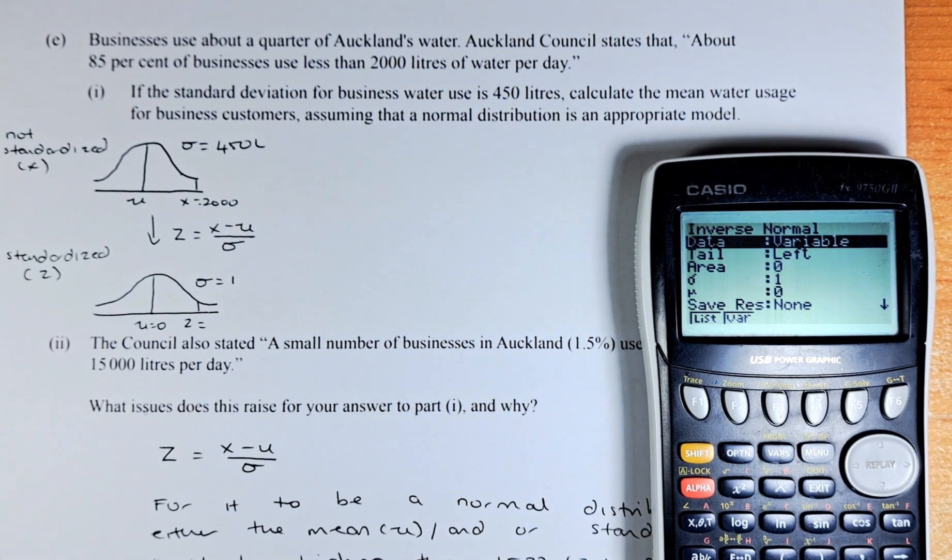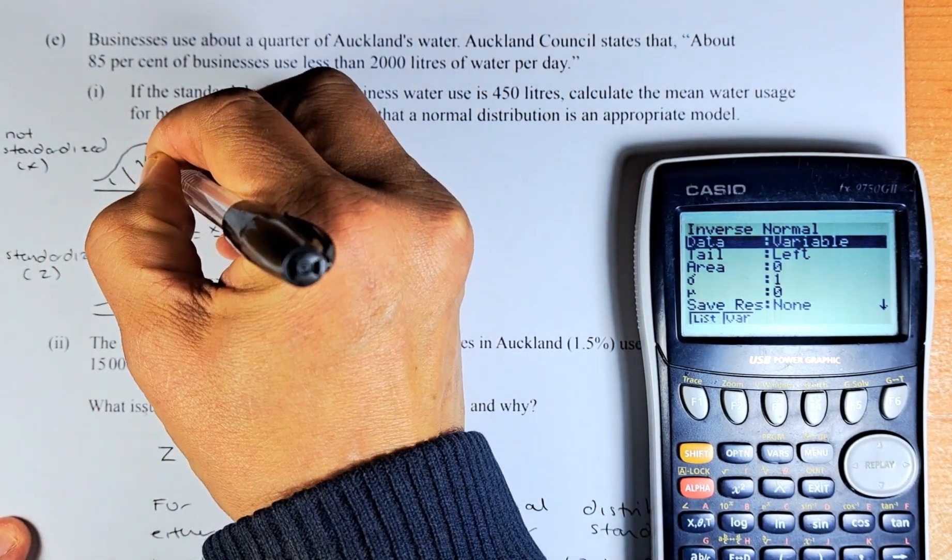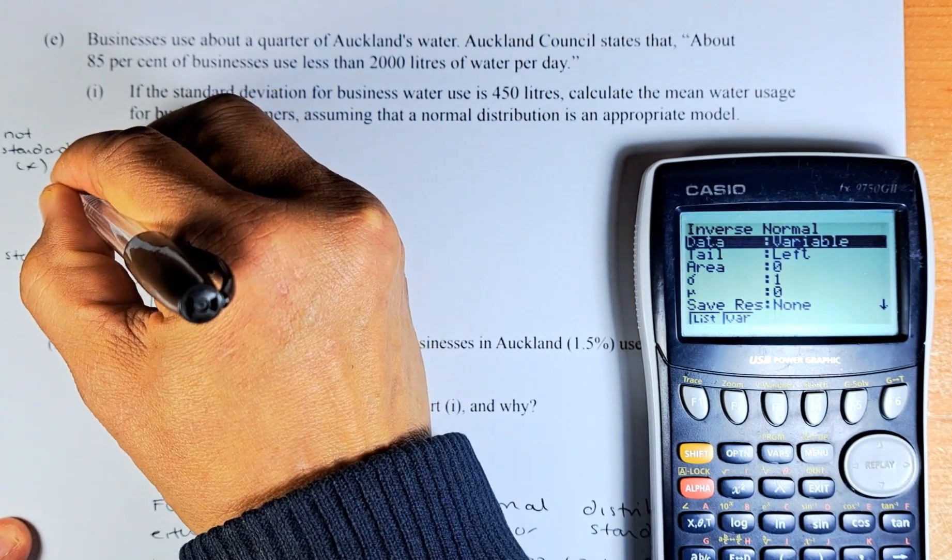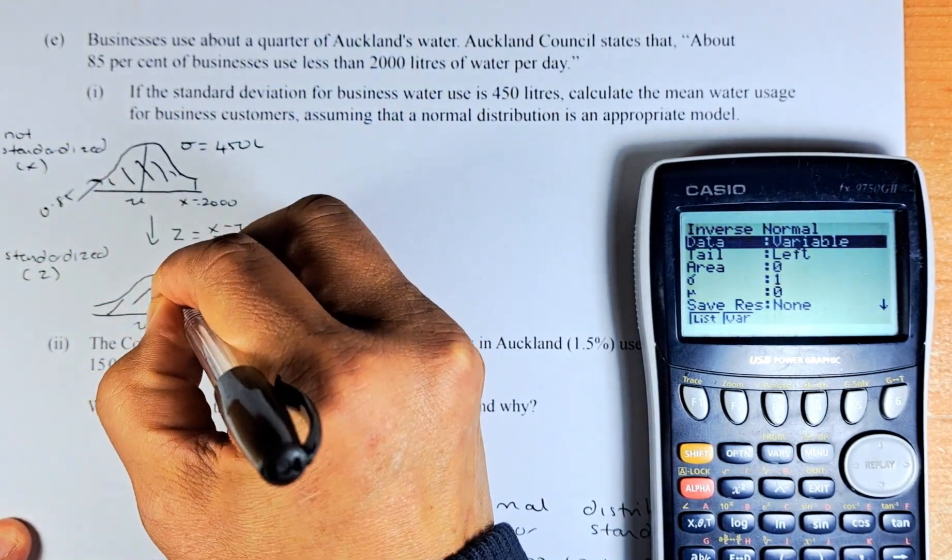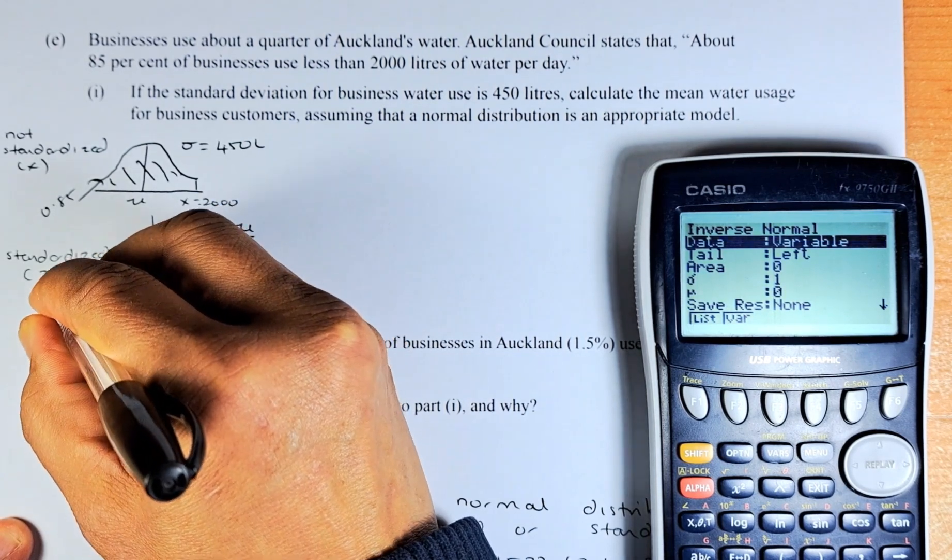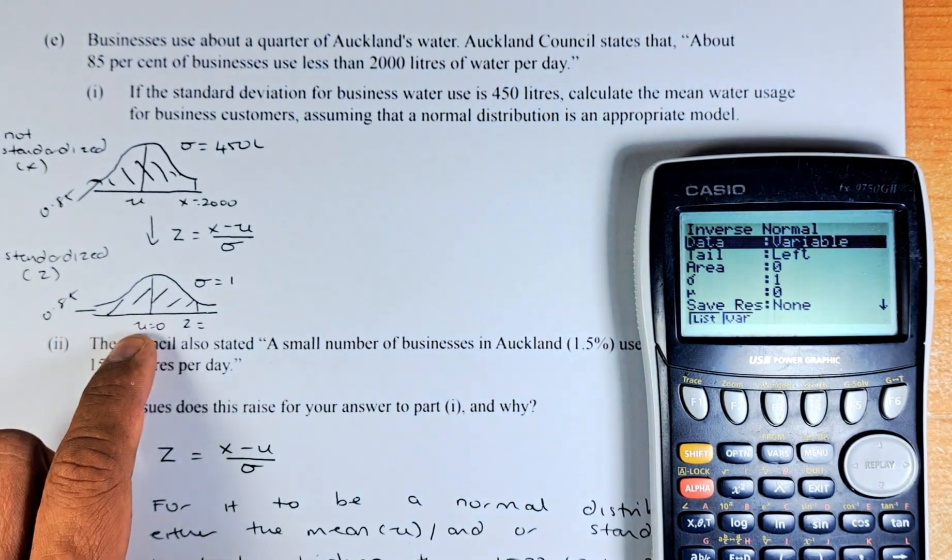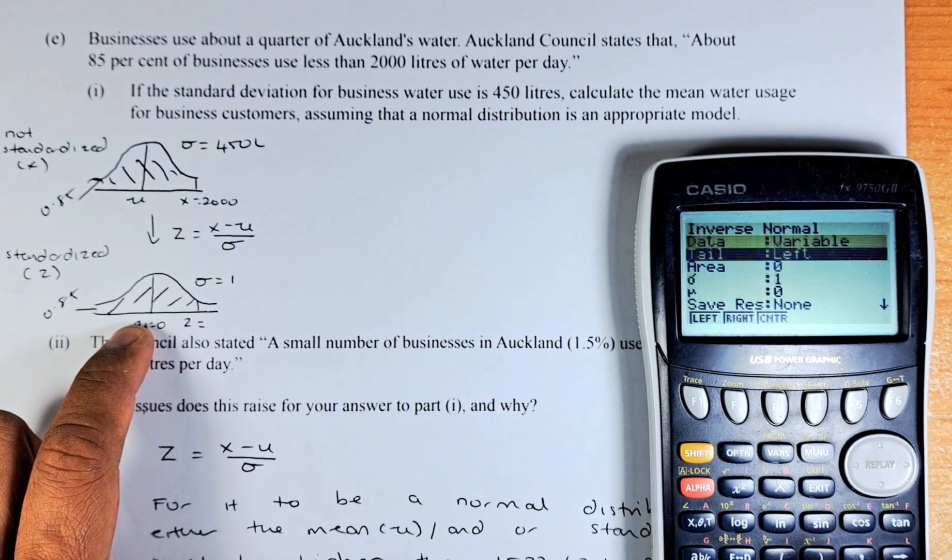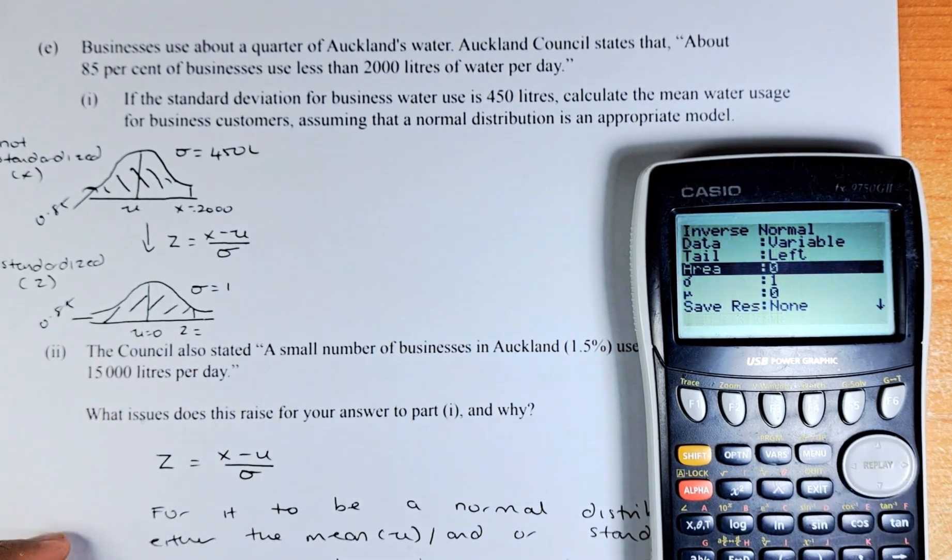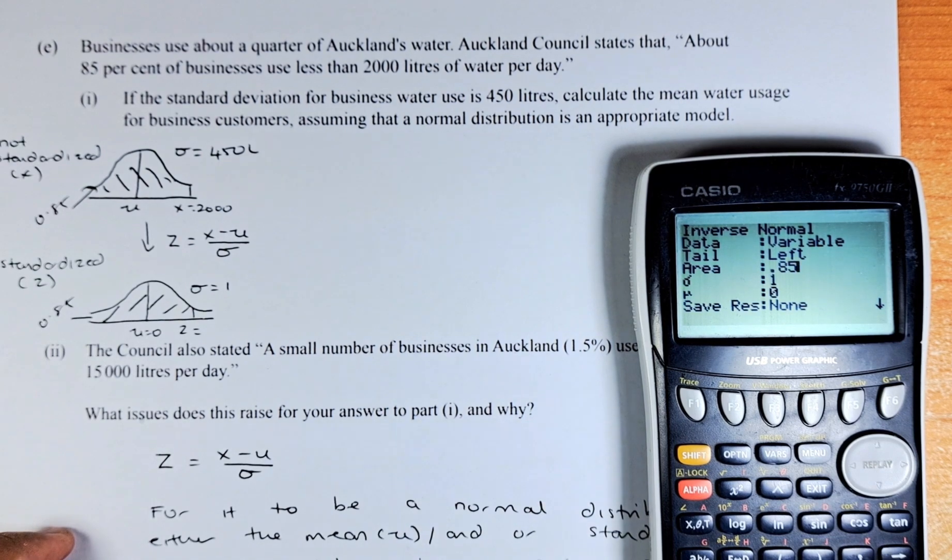We know that 85%. So this area here is 0.85 because it's 85%. So this area will also be 0.85. So we are going to calculate that area. It's a left. We already done on left. And the area is 0.85. Execute.